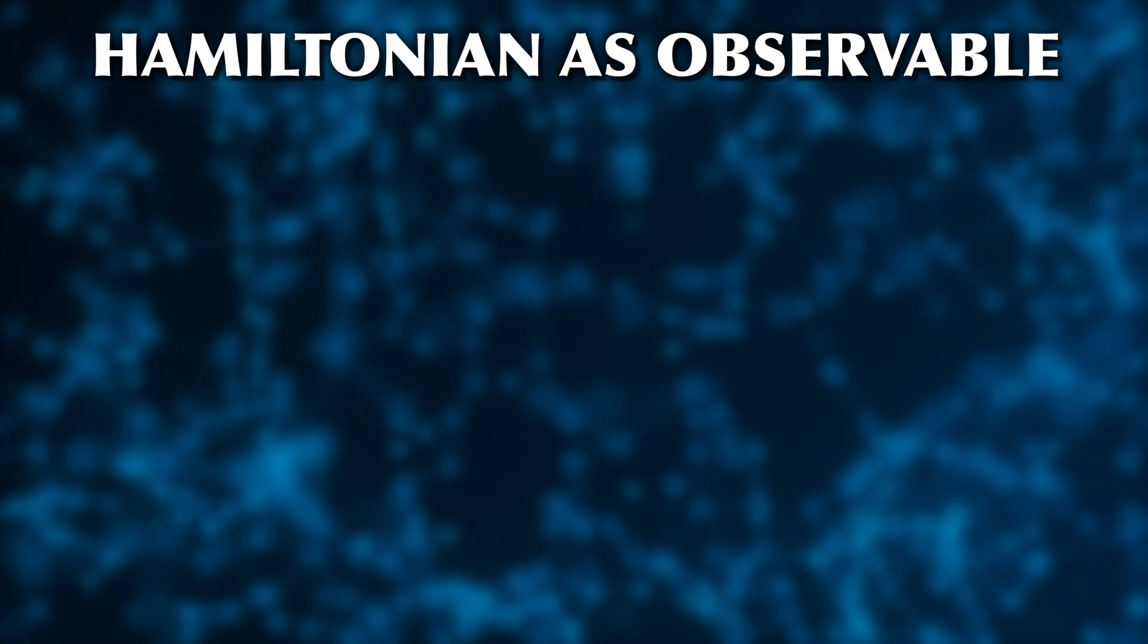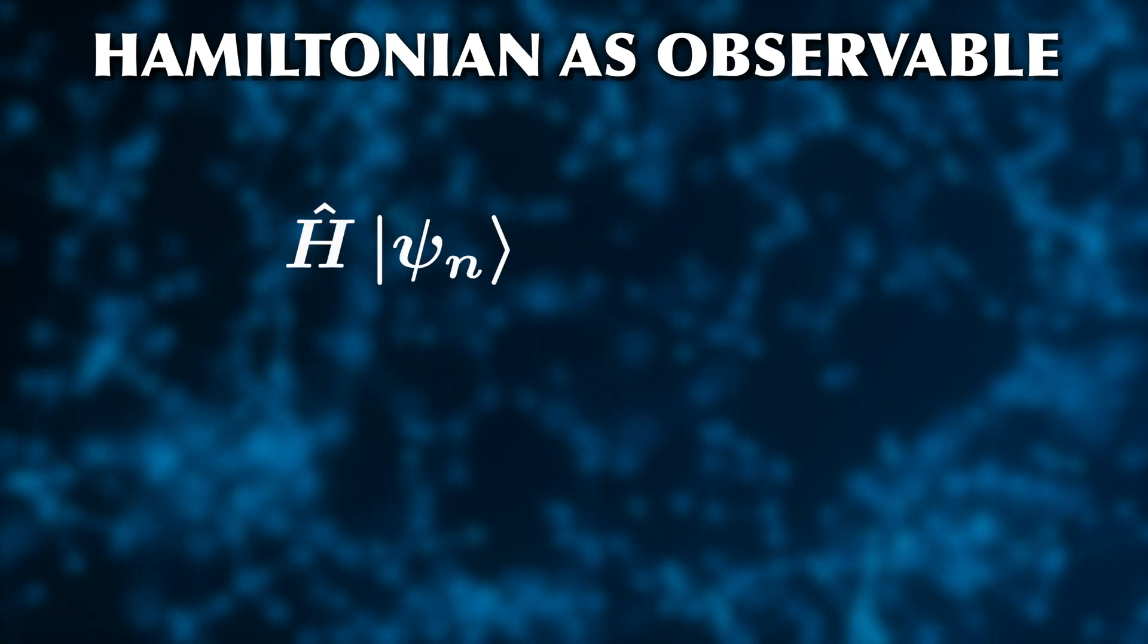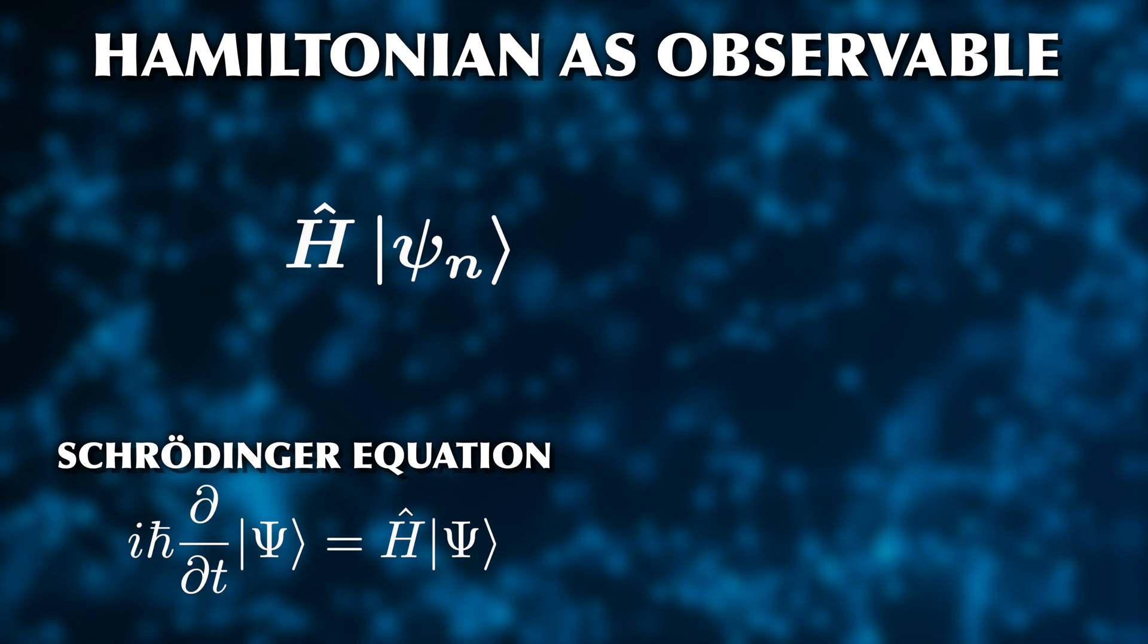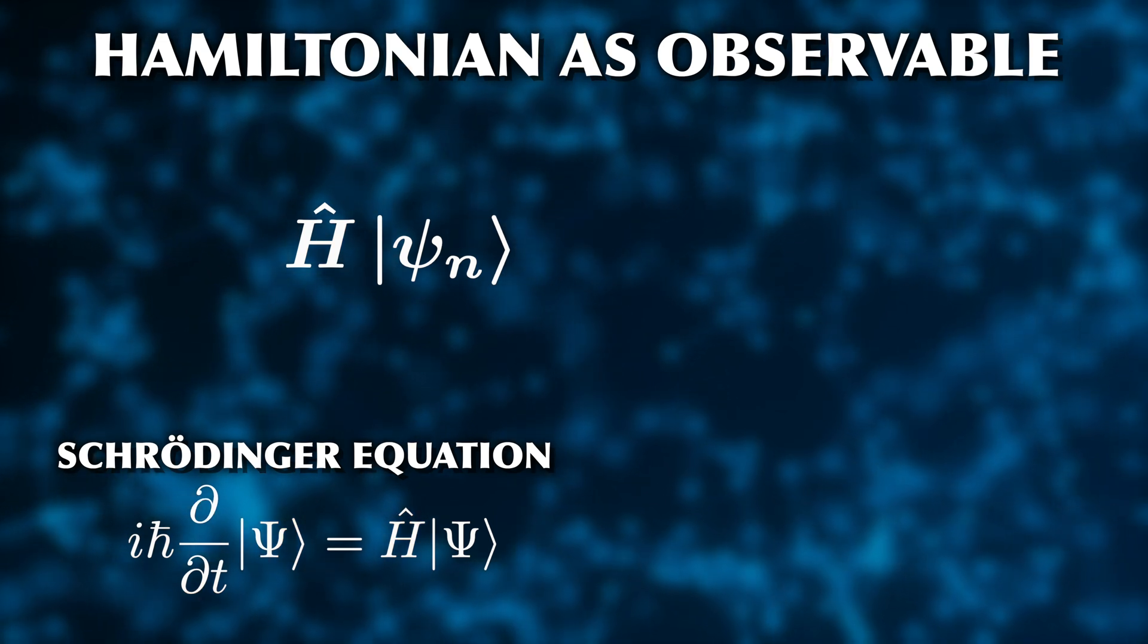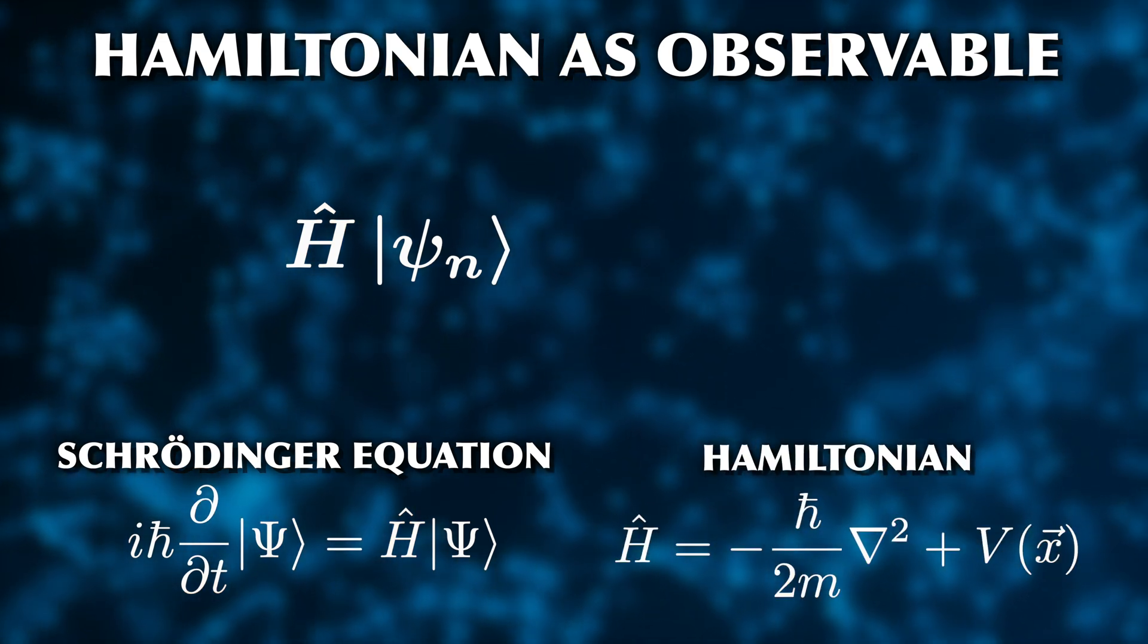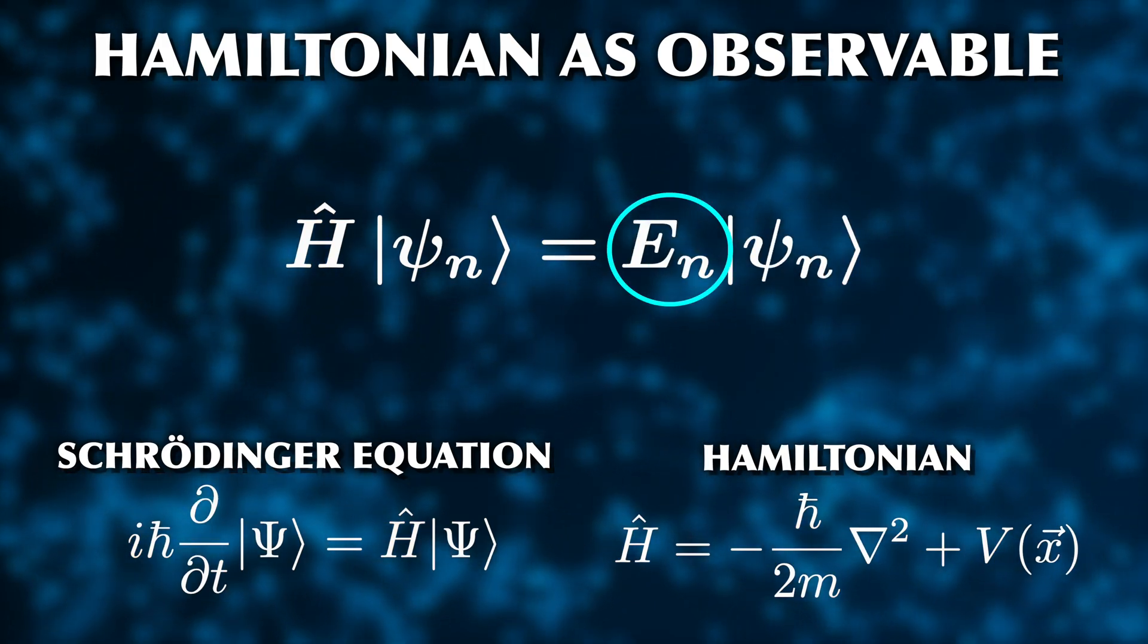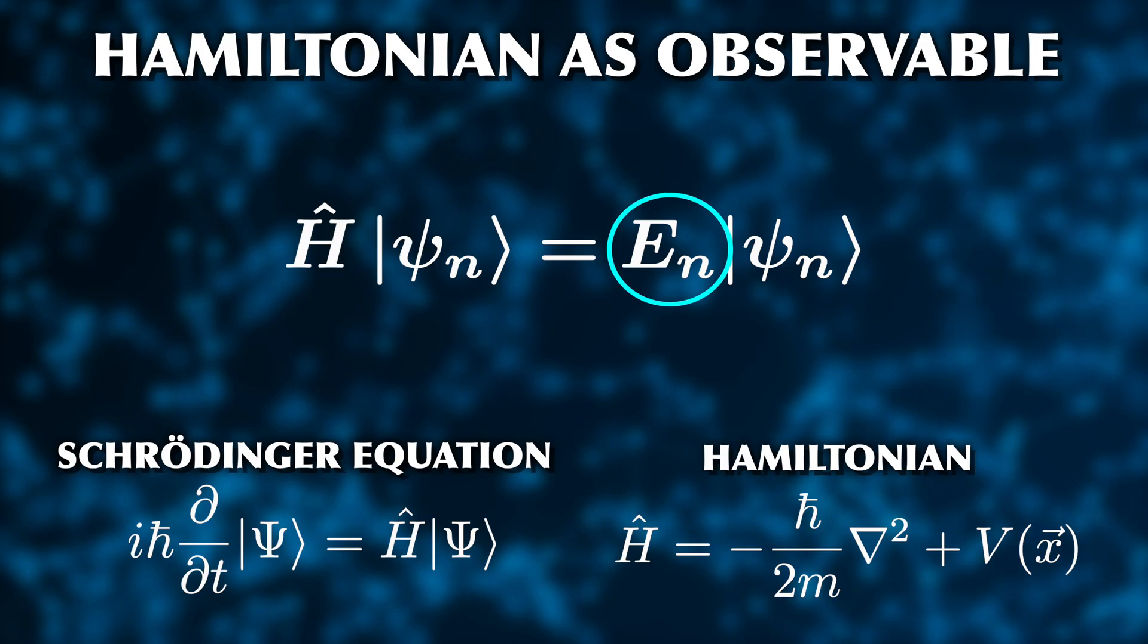Some observables can take on any value, for example position in most cases. But there are other observables that can only take on a limited set of discrete values, like the possible energies of an atom. The operator for the total energy of a system is the Hamiltonian, which we already know from the Schrödinger equation. The Hamiltonian has a sort of double role. It defines how a system evolves over time. Also, it is the total energy operator, so the eigenvalues of the Hamiltonian are the possible energy states of the system.